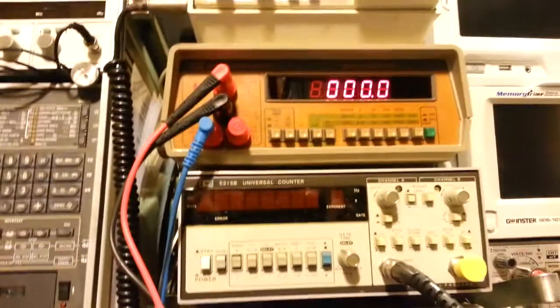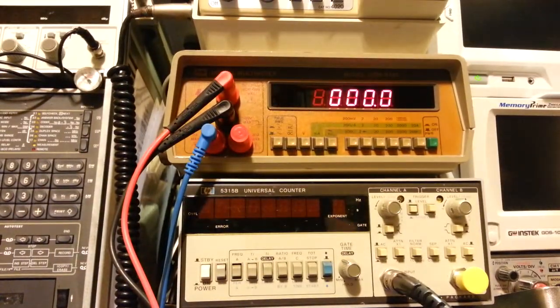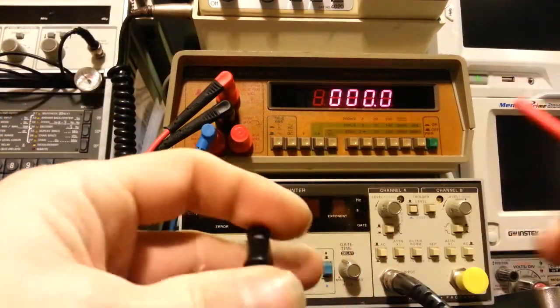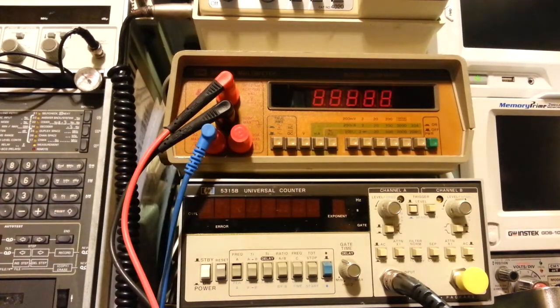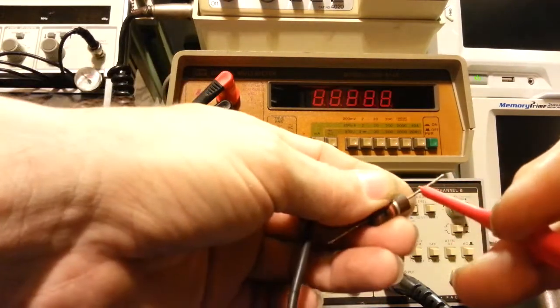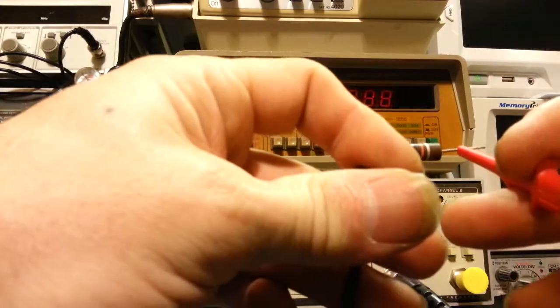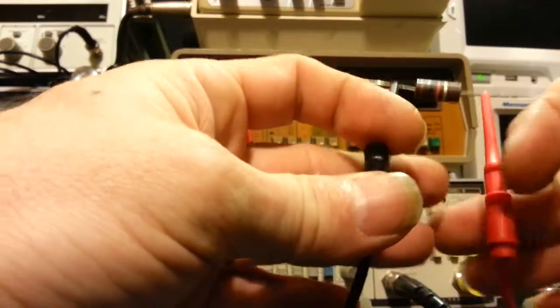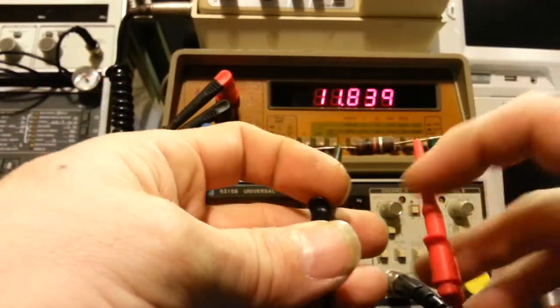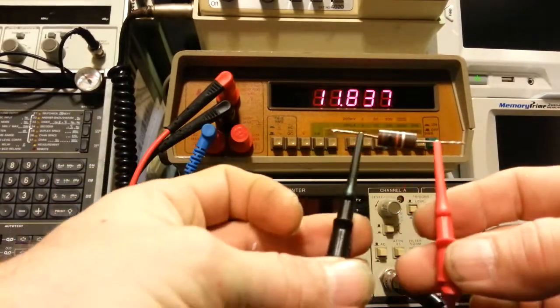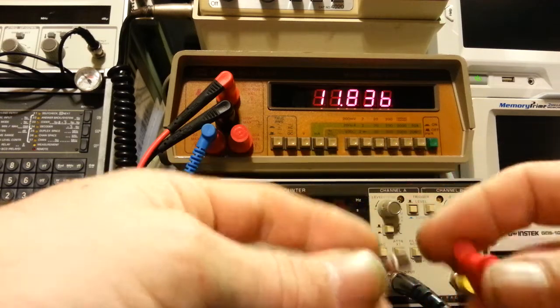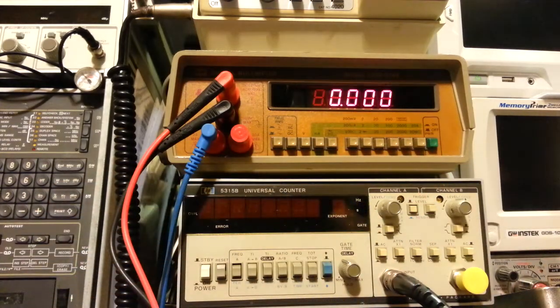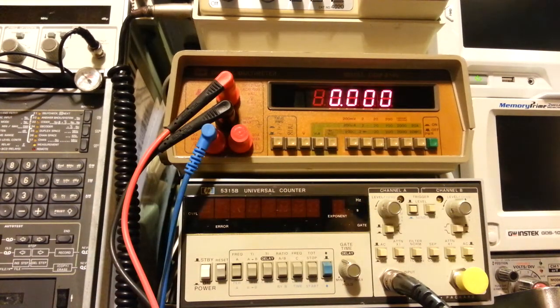So I have an ohmmeter set up here and a set of grabby fingers to grab some of these resistors, and we'll check them. So let's start with a couple of these 10Ks. Actually, with 10K we can drop down to the 20K scale. So that one measures 11,836, so out of tolerance. Not by a drastic amount, but it is out of tolerance.